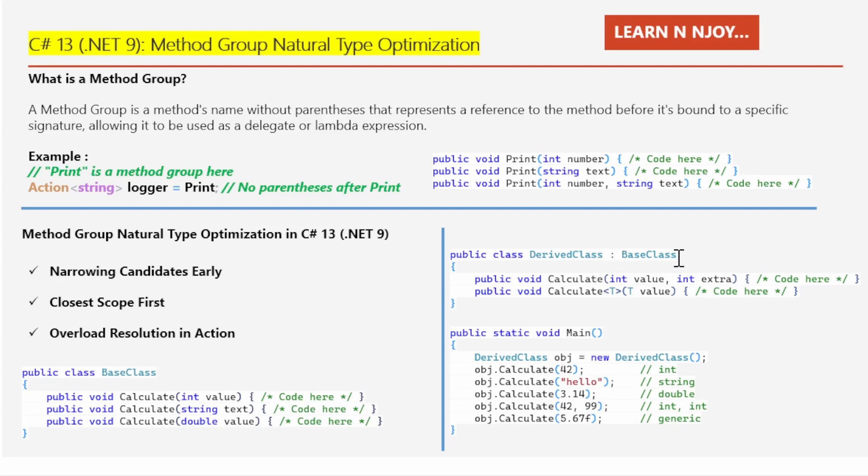And it also adds two new versions of the calculate method. That's what I have written: public void calculate(int value, int extra), and the second one is calculate<T>(T value). The second one is the generic one that can handle any type. So when we call object.calculate, the compiler has to figure out which version of the calculate method to use.